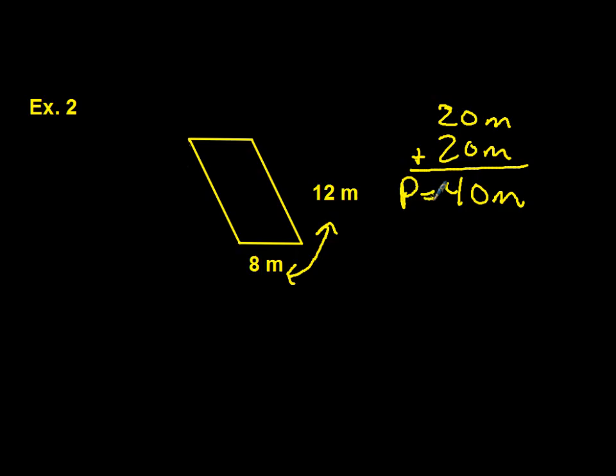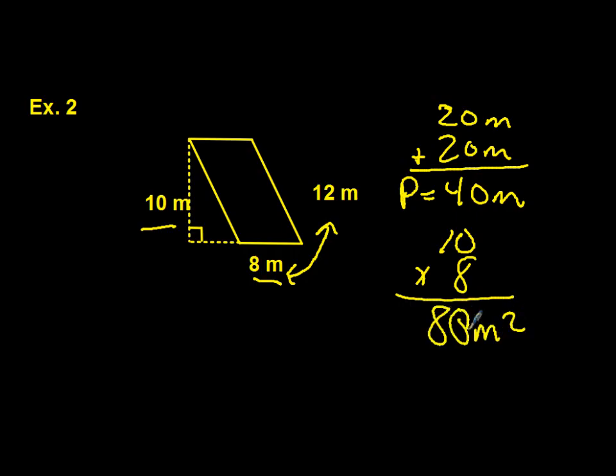Same thing as before, we need the height. We don't really have a height yet, but I'll expose the height right now. The height for this particular parallelogram is 10 meters. So we use that same formula. Area for a parallelogram is the base times the height. And 10 times 8 equals 80 meters squared.